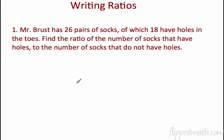It's just simply writing ratios. Mr. Brust has 26 pairs of socks, of which 18 have holes in the toes. Find the ratio of the number of socks that have holes to the number of socks that do not have holes. So we're looking for the ratio of socks that do have holes to socks that do not have holes. That's easy enough. They tell us 18 socks do, and the number that do not, they don't tell us. They tell us the total number. So we have to figure that out. That's eight.